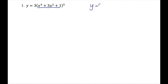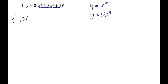Before the chain rule, you would see just something like x to the fifth. Applying the power rule to that gives 5x to the fourth. But here I don't have just x to the fifth — I have this entire expression to the fifth. So taking the derivative of the outside and leaving the inside alone, I bring the exponent down: 5 times 3 is 15. I leave the inside, x to the fourth plus 3x squared plus 1, alone and drop that exponent by 1. That's the derivative of the outside, leaving the inside alone.